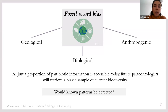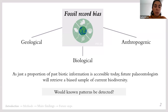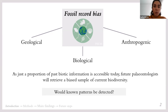This work is based on the idea that, as you may already know, the fossil record presents several biases, both related to the preservation and the sampling processes. We are going to focus on three bias sources: the geological bias, because fossilization mainly takes place in sedimentary environments; the biological bias, because species traits can facilitate or hinder fossilization; and the anthropogenic bias, because human history can also influence fossil recovery.